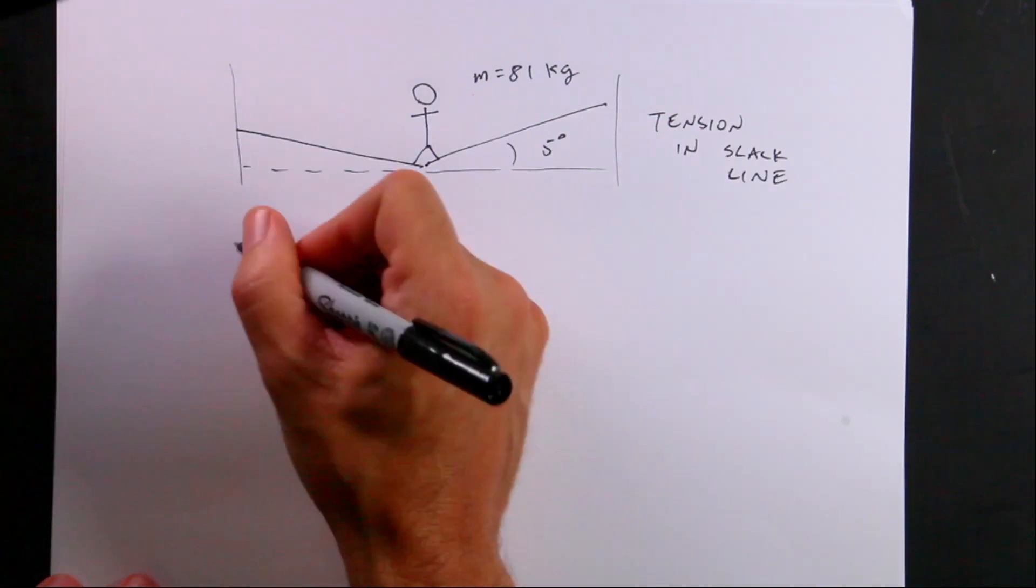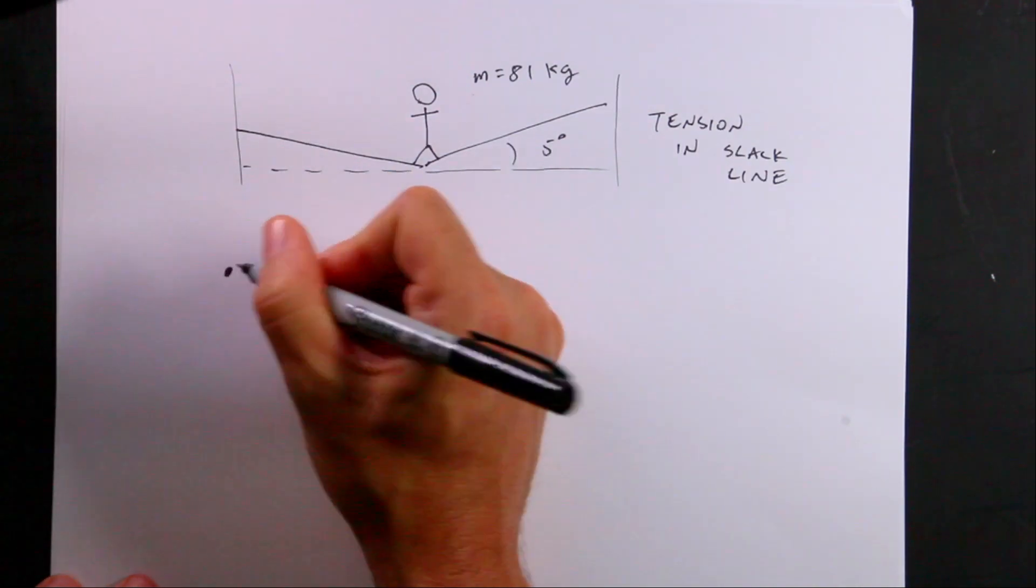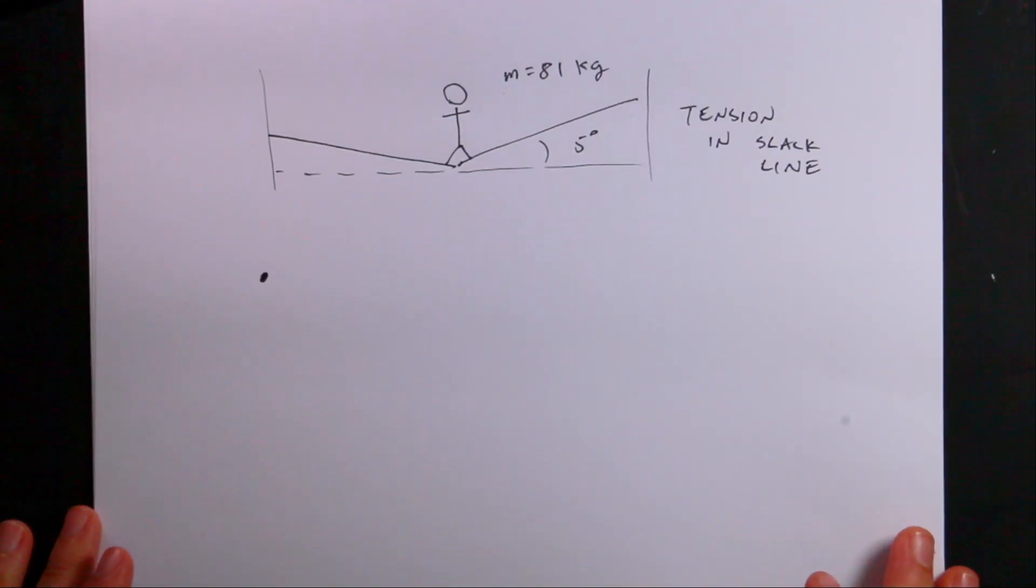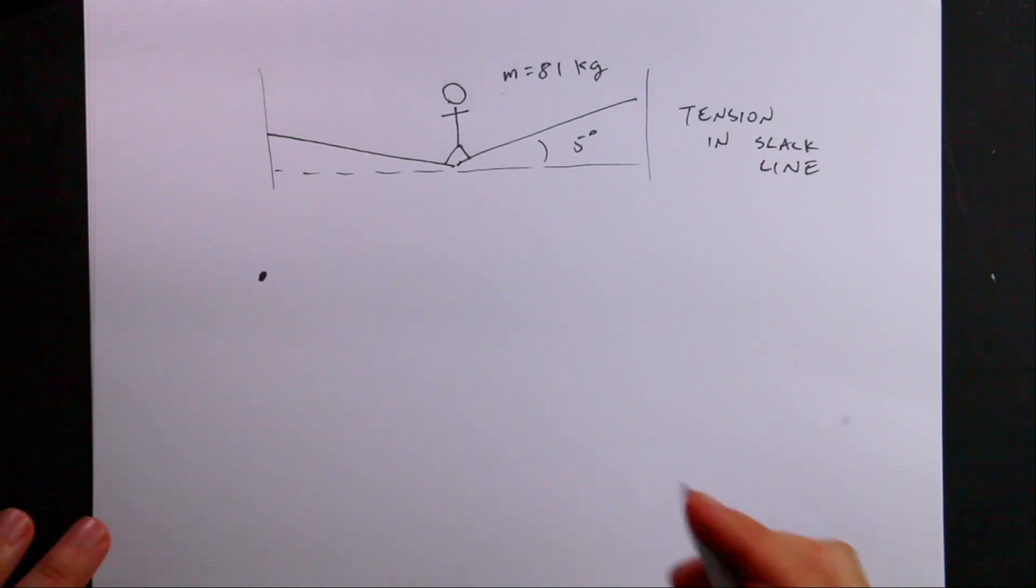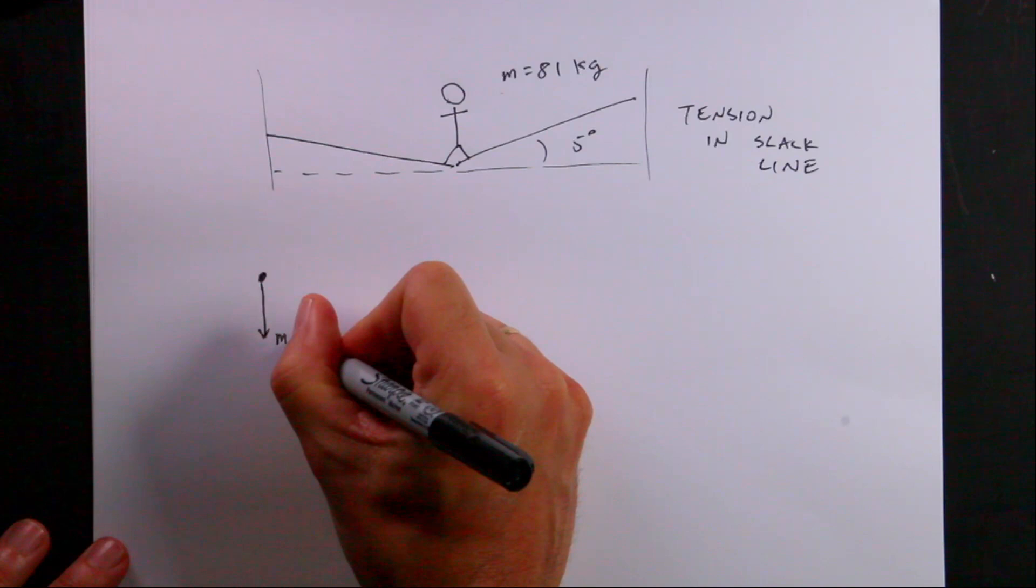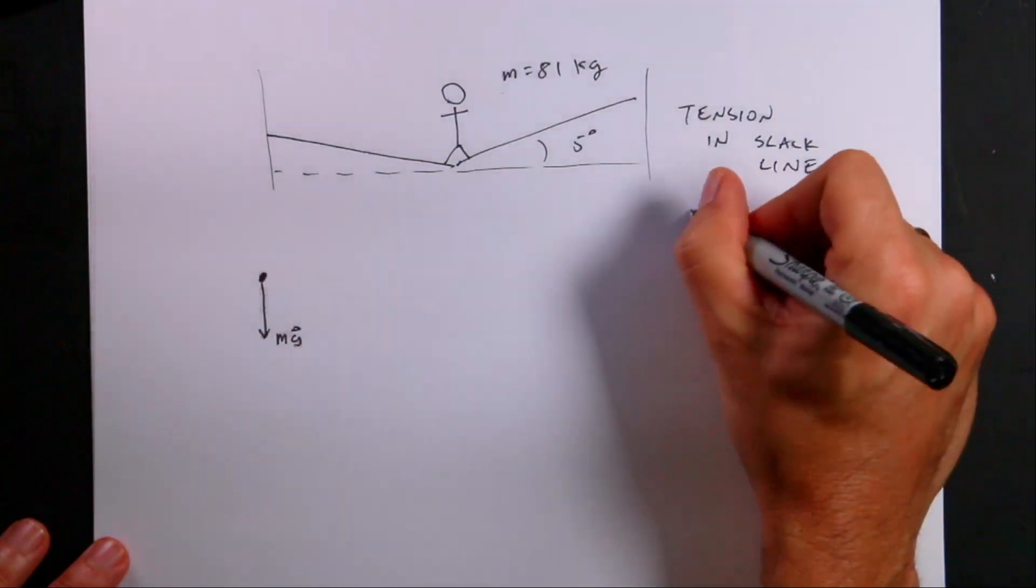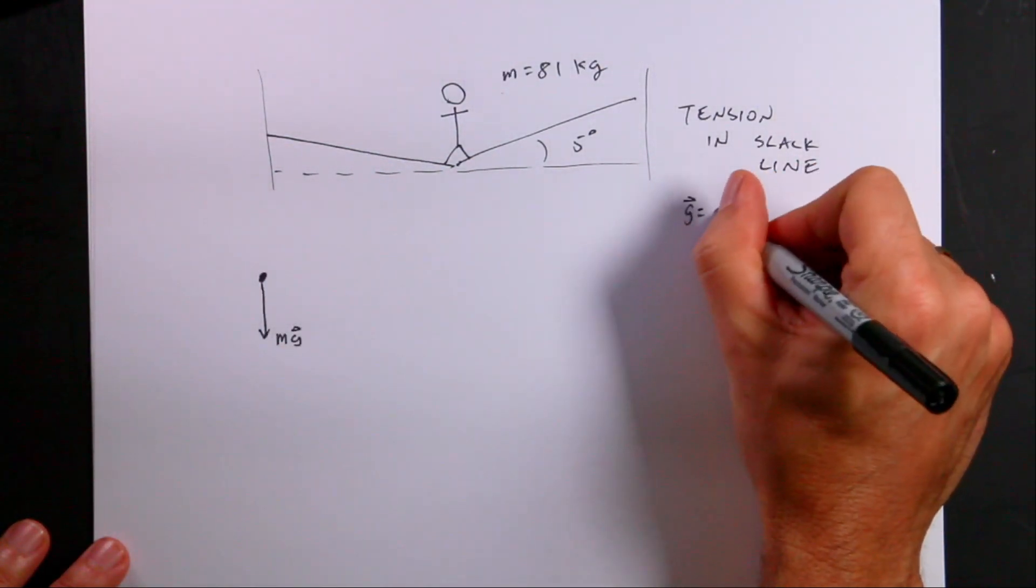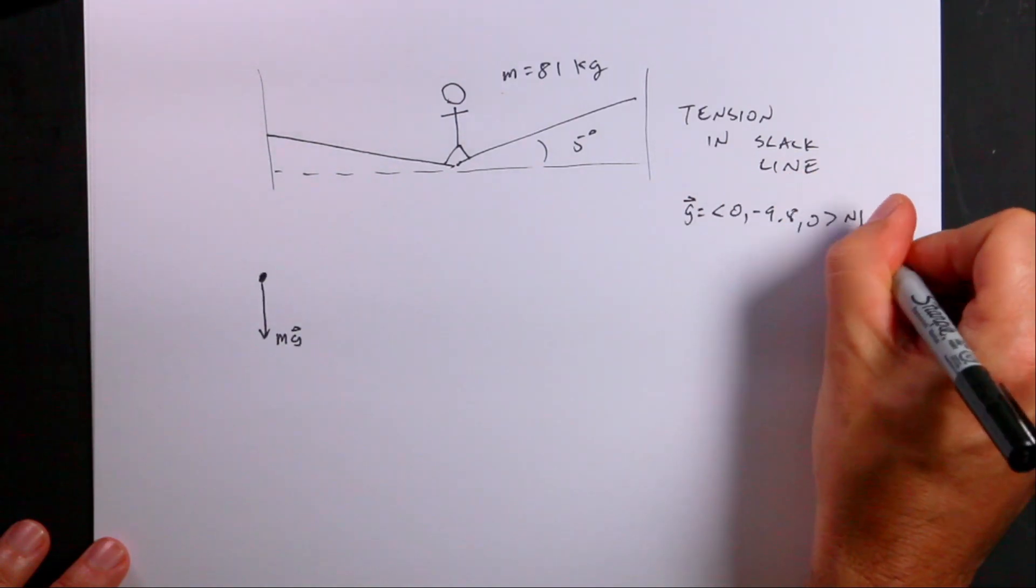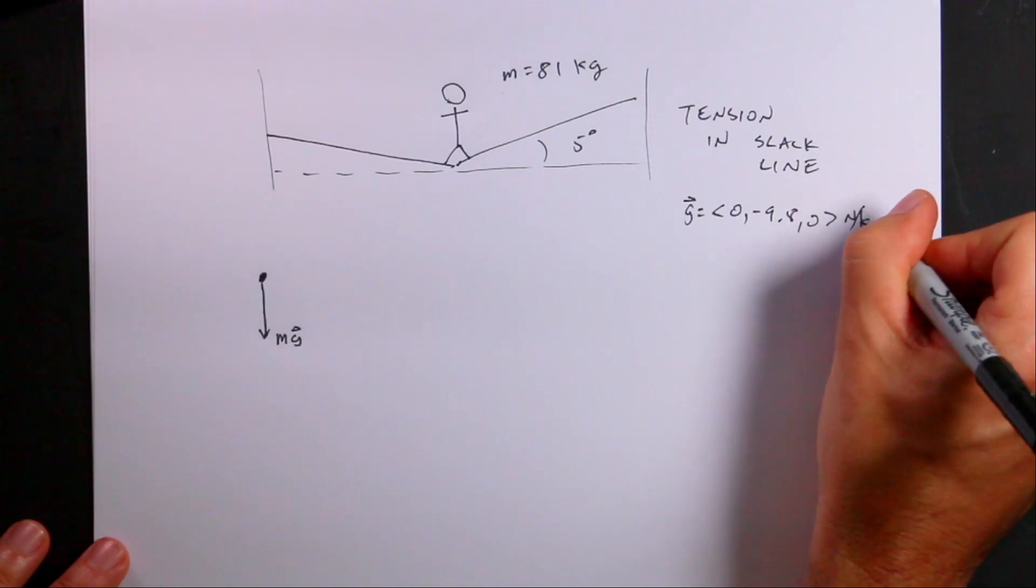We're going to start off with a force diagram. So here's my human and we think about what forces are acting on the human. I have long range and contact forces. The long range force I have is the gravitational force pulling straight down. And that would be mg, where g is the gravitational field on the surface of the earth. It has a value of negative 9.80 newtons per kilogram.